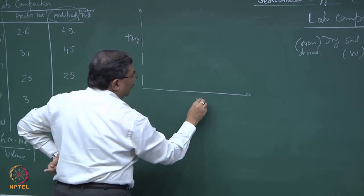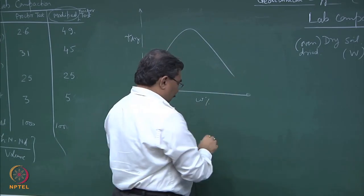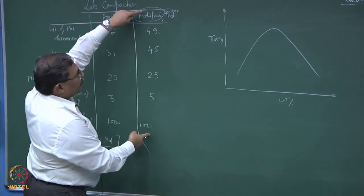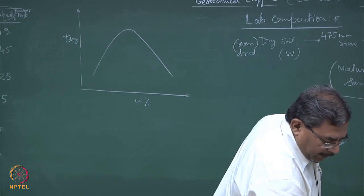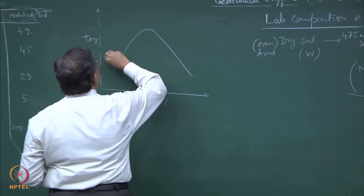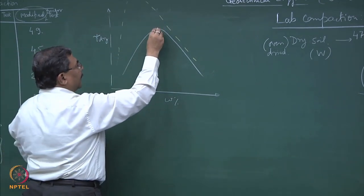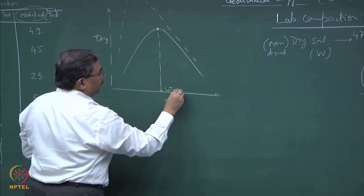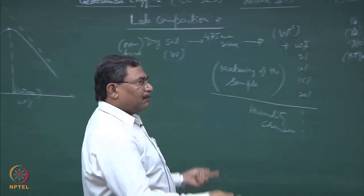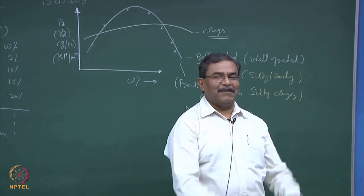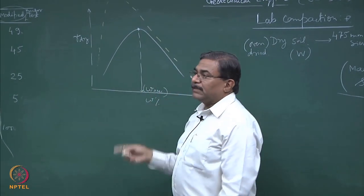What is the interpretation of the curve? If this is gamma dry versus moisture content — the Proctor compaction curve — the moment I enhance the energy of compaction, it becomes modified Proctor. If I superimpose for the same material the standard Proctor and modified Proctor compaction curves, this is how the curve would shift. This point is designated as WOMC — Optimum Moisture Content — and for a material, this WOMC is a fingerprint.